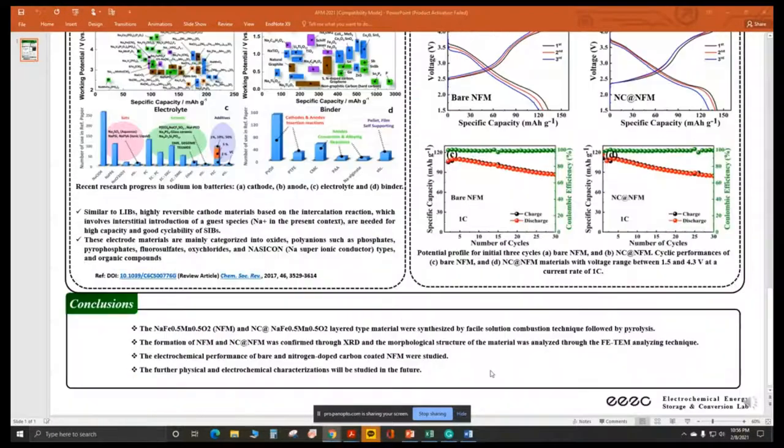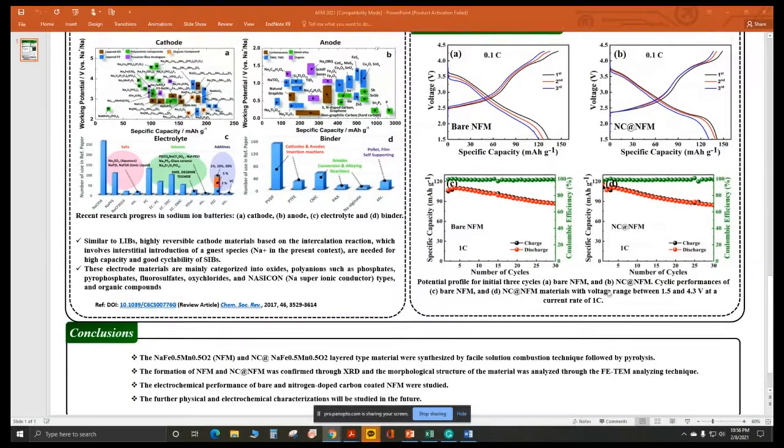After carbon coating, it improves the capacity to around 145 mAh per gram. After the third cycle, it faded to 130 mAh per gram at 0.1C. During the cycling process, the carbon coated material improves the initial capacity of the NFM material.